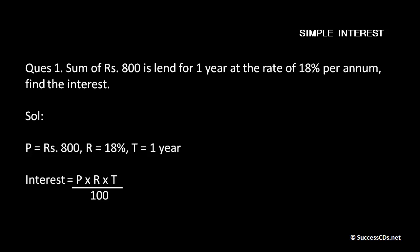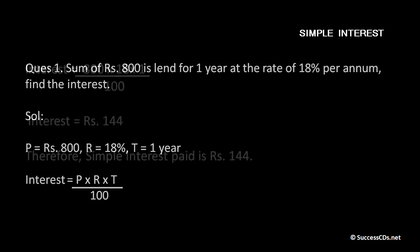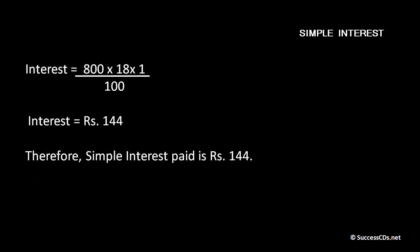Principal here P is 800 rupees, R the rate of interest is 18% and time period T is one year. So using the formula for simple interest, which was P into R into T upon 100, we get interest equals 800 into 18 into 1 upon 100. Now by cutting out the common factors, we get interest to be rupees 144. Therefore, simple interest paid in this question is rupees 144.